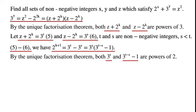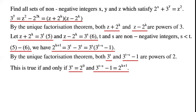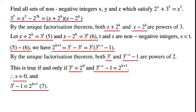By the unique factorization theorem, both 3 to the power of s and (3 to the power of (t minus s) minus 1) are powers of 2. This is true if and only if 3 to the power of s equals 2 to the power of 0 equals 1, and 3 to the power of (t minus s) minus 1 equals 2 to the power of (k plus 1). So s equals 0 and 3 to the power of t minus 1 equals 2 to the power of (k plus 1).